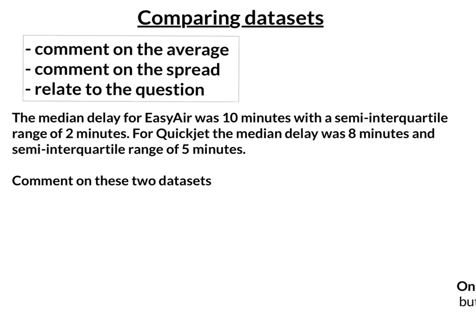So let's look at this first one. The median delay for Easy Air was 10 minutes with a semi-interquartile range of 2 minutes. For Quick Jet, the median delay was 8 minutes and semi-interquartile range of 5 minutes. Comment on these two data sets.